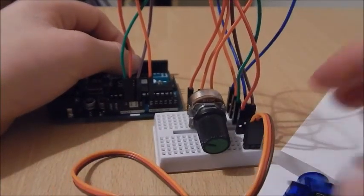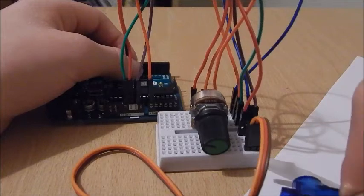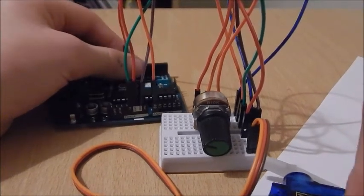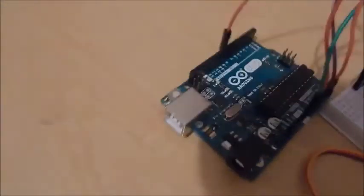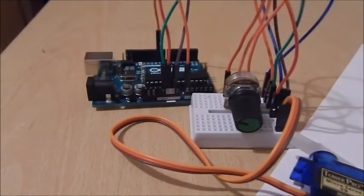So on the servo, on the right is ground, in the middle is five volts, on the left it's going to be to a digital pin and the digital pin is nine. So that is the circuit.